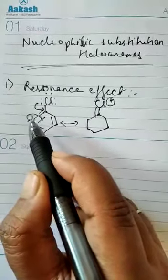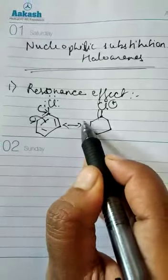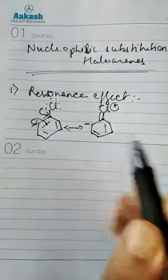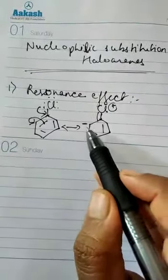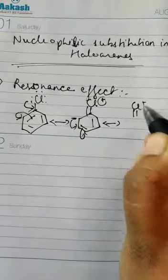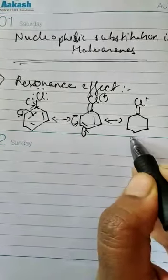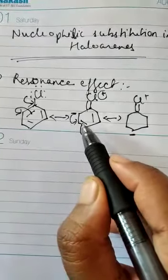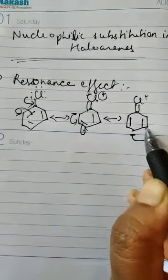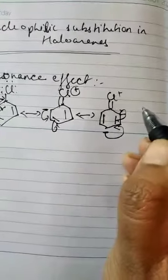The electrons shift to the next carbon atom, giving a negative charge there, while the remaining bonds stay as they are. In the next step, this electron shifts to another carbon atom and this bond shifts to the next carbon atom, giving the next resonating structure. Then this bond shifts its electrons to the next carbon atom, the negative charge moves there, and another bond shifts accordingly. This continues to give the next resonating structure.